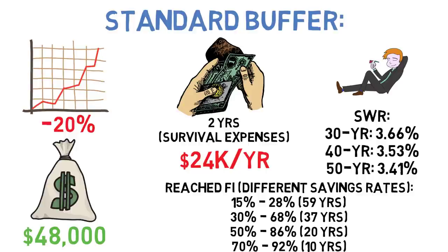With a standard buffer we tended to reach financial independence in 59, 37, 20, and 10 years at those levels of saving respectively. So with that groundwork being laid we can move on to the tweaks.